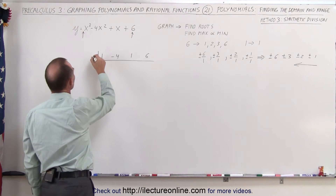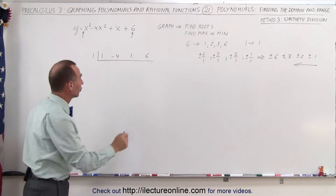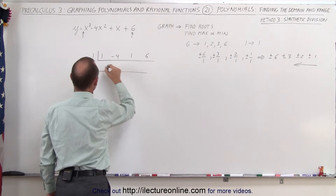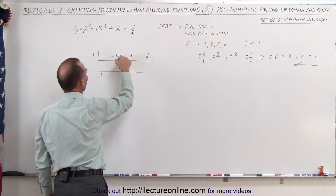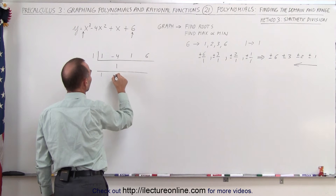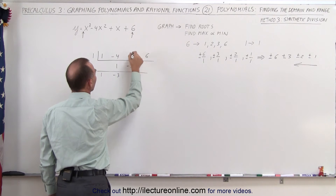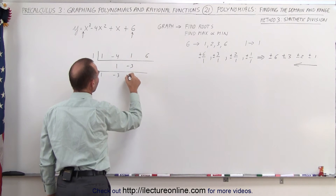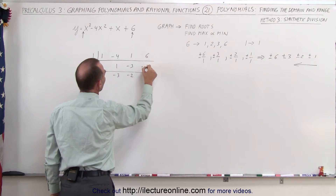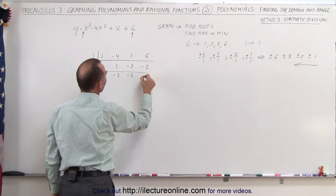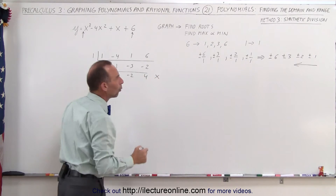We're going to plug in positive 1 and see if that gives us one of the roots. Drop down the 1: 1 times 1 gives me 1; negative 4 plus 1 is negative 3; 1 times negative 3 is negative 3; add that together, I get negative 2. 1 times negative 2 is negative 2; add that together, I get positive 4. So this is not one of the roots.